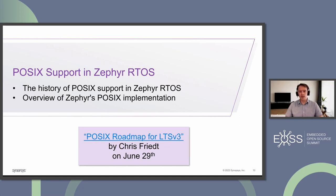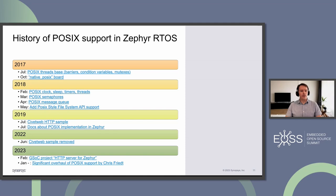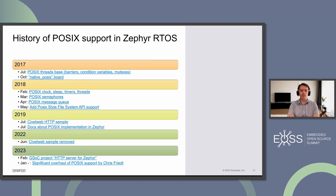I would strongly encourage you to visit another presentation happening today made by Chris Friedt, who will be talking in much more detail about the current state and finer technical details. As you can see, the first submission around POSIX landed in Zephyr in 2017, which was only a year and a half since the first release of Zephyr — meaning even back in those days there was demand and interest. One thing I'd like to mention in particular is the so-called native POSIX board, which was introduced very early — basically a lightweight translation layer between Zephyr APIs and a POSIX-compliant host, in our case a Linux distro on your development machine.